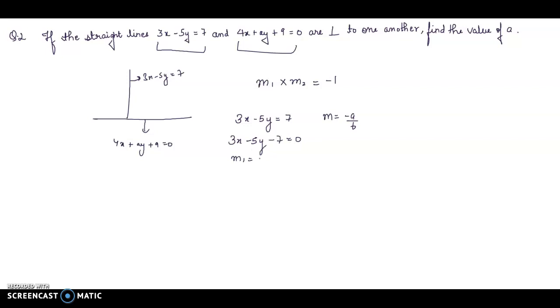M₁ will be -3 divided by -5. I will get 3/5 as the slope. And for the second line, that is 4x + ay + 9 = 0, slope will be -4/a.